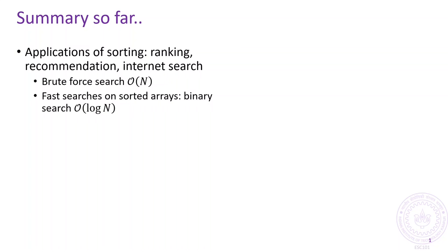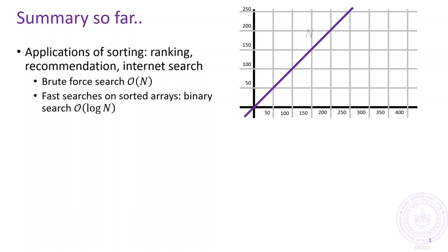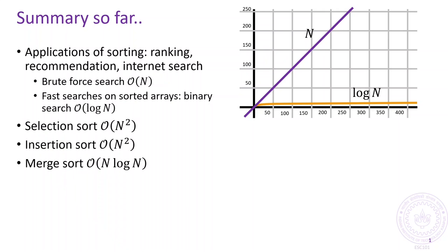In previous discussions, we have seen how sorting can help us speed up searching by enabling binary search that is much faster than brute force search. So far, we have learnt about three sorting algorithms. Two slow sorting algorithms, selection sort and insertion sort with a time complexity of order n square, and a fast algorithm called merge sort with a time complexity of order n log n.